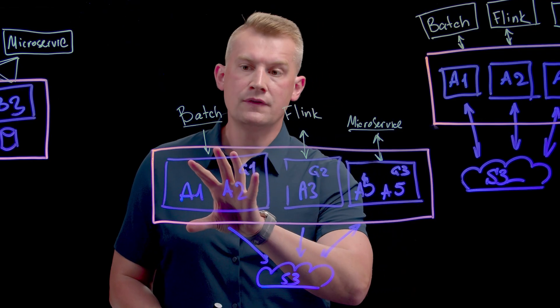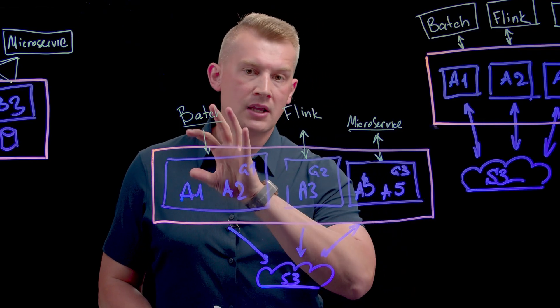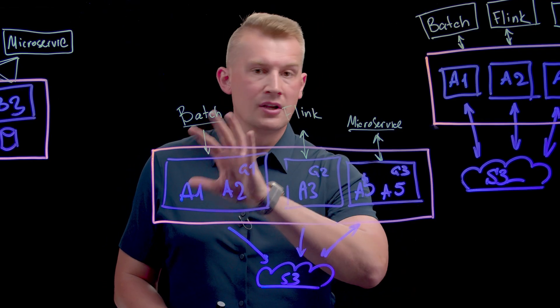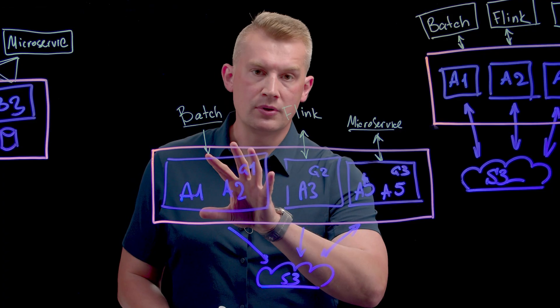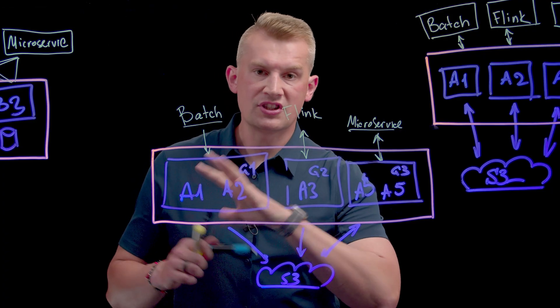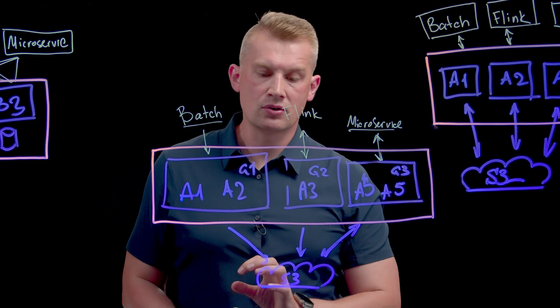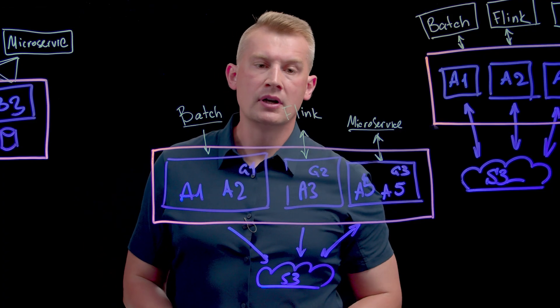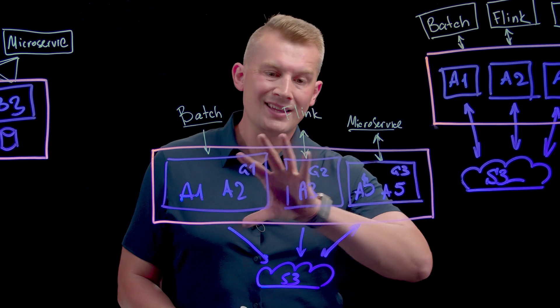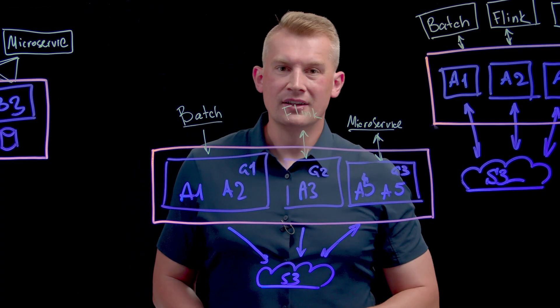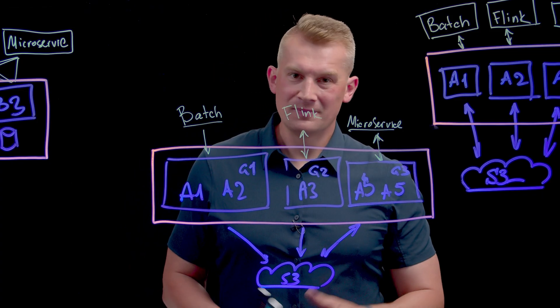So no more scenarios where a bad job causes other services to suffer. If you feel that a particular job requires more compute, you can scale your reads — increase that group, add more agents to it — and none of this will affect other groups. That's pretty cool.